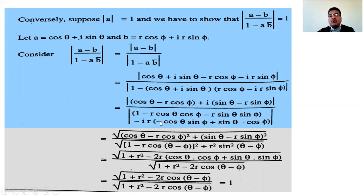Using sin²θ + cos²θ = 1 and r²(cos²φ + sin²φ) = r², this simplifies to 1 + r² - 2r(cosθ·cosφ + sinθ·sinφ) = 1 + r² - 2r·cos(θ - φ). Similarly the denominator simplifies to √(1 + r² - 2r·cos(θ - φ)).